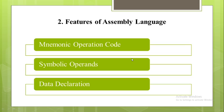The mnemonic operation codes are easy to understand and remember compared to the numeric codes used in machine level languages. The second feature of assembly language is symbolic operands. Assembly language uses symbolic names to represent a data or address.